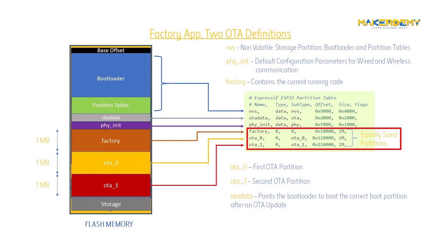Even though OTA updates are necessary for IoT applications, the need to store the previous code introduces a memory disadvantage in the ESP32. This is where creating custom partition tables will help. By properly defining and configuring the flash memory based on your application, you will save a lot of memory. Thus, we must take this factor into our design considerations before implementing the OTA feature in a product.